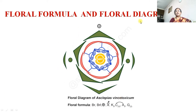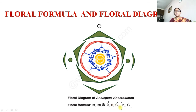Floral formula and floral diagram: bracteate, actinomorphic, bisexual. Calyx — five, free. Corolla — five, gamopetalous (fused). Androecium — five stamens in the form of staminodes as translators, adnate to the corona and fused with the gynoecium. The stigma is pentangular so at each corner a translator is present, giving five translators with the ovary at the center. Gynoecium — bicarpellary, syncarpous, ovary superior.